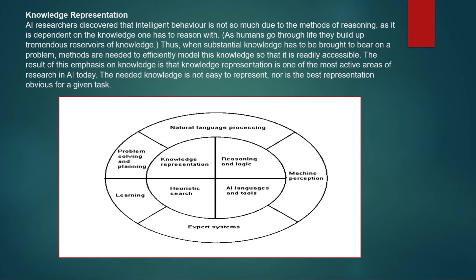The second point is knowledge representation. This is one of the most active areas of research in AI today — what do we mean by knowledge and how do we represent it? Various techniques and schemes are available, such as CYC, semantic networks, frames, and scripts. A number of schemes are available for the representation of knowledge.